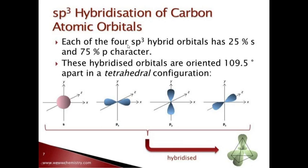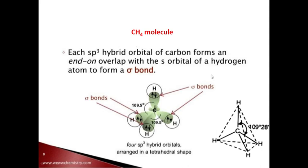In SP3 hybridization of carbon, the S character is 25% and the P character is 75%. This gives a tetrahedral configuration. Each SP3 hybrid orbital of carbon forms an end-on overlap with the S orbital of hydrogen to form a sigma bond. The tetrahedral bond angle in CH4 is 109.5 degrees.